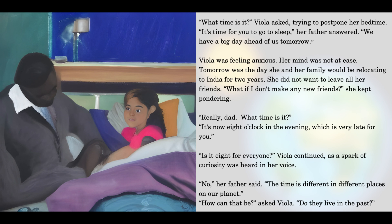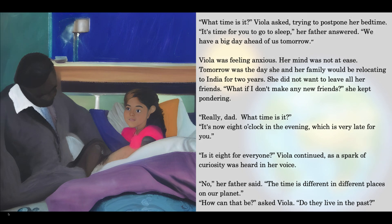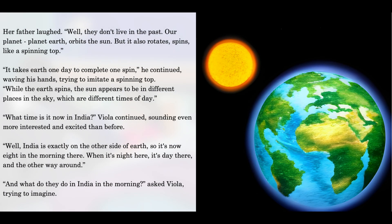"Really, Dad, what time is it?" "It's now eight o'clock in the evening, which is very late for you." "Is it eight for everyone?" Viola continued, as a spark of curiosity was heard in her voice. "No," her father said. "The time is different in different places on our planet." "What? How can that be?" asked Viola. "Do they live in the past?" Her father laughed.